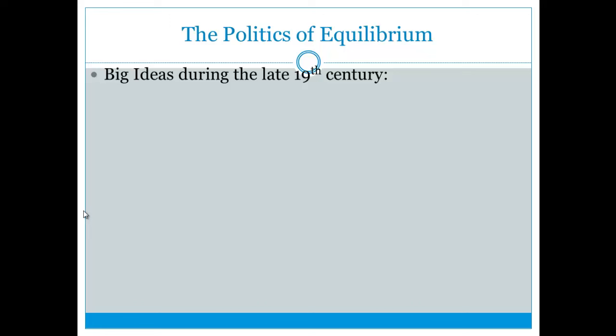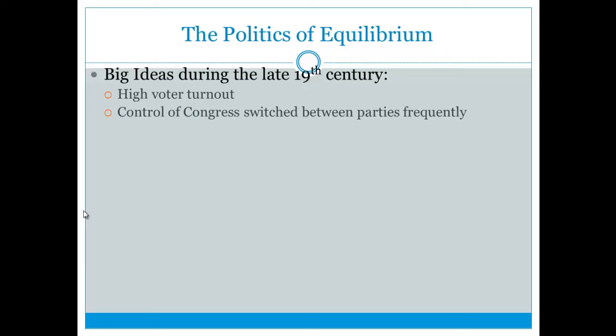Some big ideas you should think about during the late 19th century, especially when it comes to politics: there's very high voter turnout, and control of Congress goes back and forth constantly between Republicans and Democrats. Republicans were generally supported by Northern Protestants and the middle class, and they favored high tariffs — Republicans raise.